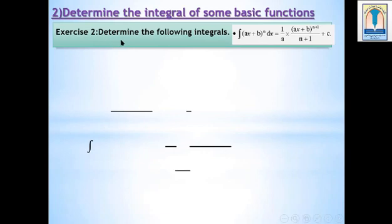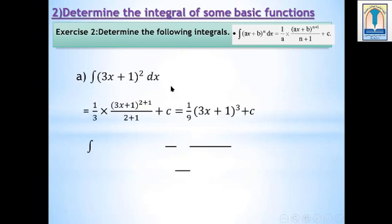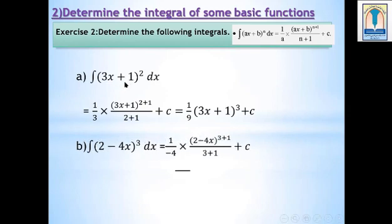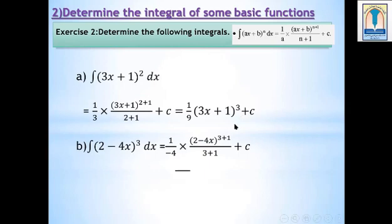Exercise: Determine the following integrals. Part A: Integral of (3x + 1) squared dx. This is similar to the formula for (ax+b)^n, with a equals 3, b equals 1, and n equals 2. Applying the rule, we get 1 over 3 times (3x+1)^(2+1) over (2+1) plus c. Multiplying 3 by 3 gives 1 over 9, so the result is 1 over 9 times (3x+1)^3 plus c.